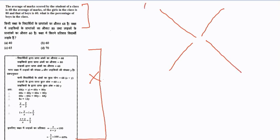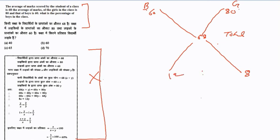We have boys, girls, and the total class. The boys' average is 60, the girls' average is 80, and the total average of all the classes is 68. Applying allegation: 68 minus 60 equals 8, and 80 minus 68 equals 12. Simplifying gives us 2 and 3.